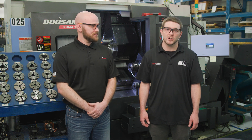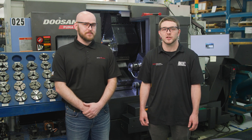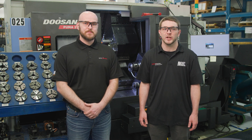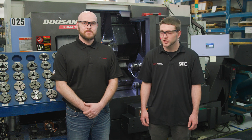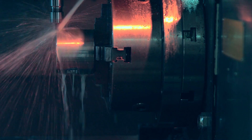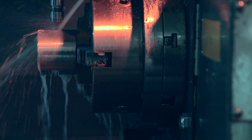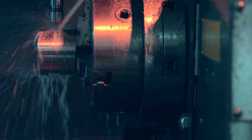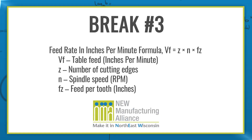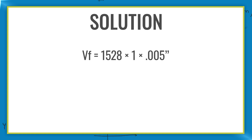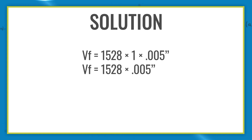Feed rate refers to the pace at which the tool is cutting the work piece. Because we now know the desired RPM, we can calculate the cutting tool's feed rate in inches per minute. To solve for feed rate, take the number of revolutions per minute made by the machine spindle, multiplied by the number of cutting edges, multiplied by the manufacturer-provided feed per tooth value. Using this equation, we calculated a desired feed rate of 7.64 inches per minute.